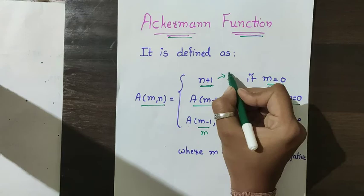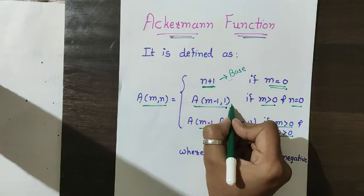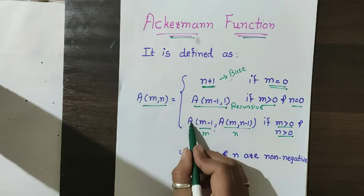The first case is the pure base case. The second case, where m is greater than 0 and n equals 0, is a recursive case because I am calling a(m minus 1, 1) — this function again.